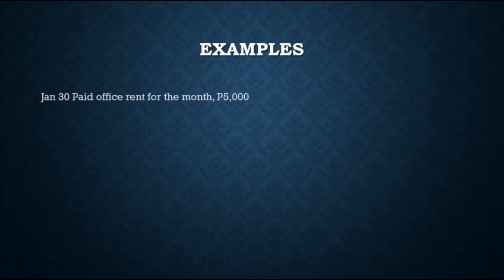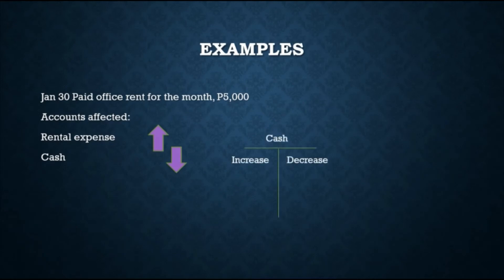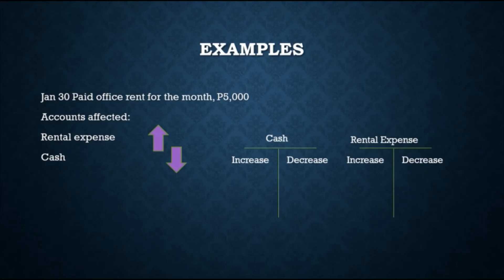For the last transaction on January 30, office rent for the month was paid amounting to $5,000. The accounts affected are rental expense and cash. Rental expense will increase since an expense for rent was incurred, and cash will decrease since payment was made. Since cash decreased, it goes on the credit side. Since rental expense increased, it goes on the debit side. The journal entry is: debit Rental Expense $5,000 and credit Cash $5,000.